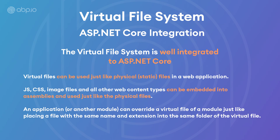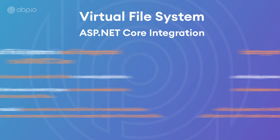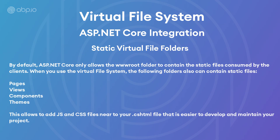An application or another module can override a virtual file of a module, just like placing a file with the same name and extension into the same folder of the virtual file. By default, ASP.NET Core only allows the wwwroot folder to contain the static files consumed by the client. But when you use the virtual file system, additional folders can also contain static files, which allows you to add your JavaScript and CSS files near your HTML files — making it easier to develop.